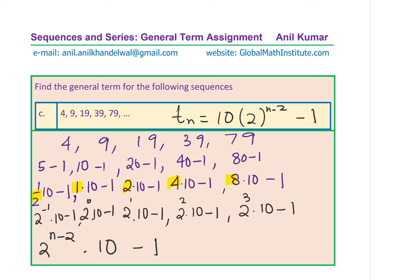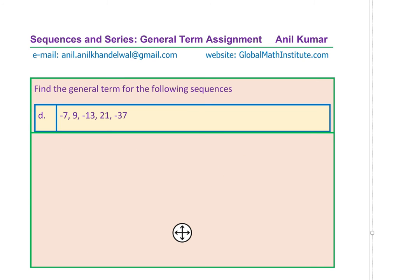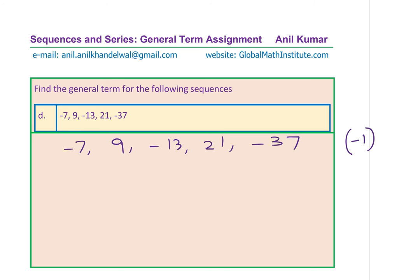Let's move on and take the next one — find the general term for the following sequence. This time, we have incorporated negative and positive numbers. It is: −7, 9, −13, 21, −37. So alternately, we are having the negative term. Whenever you have alternate negative terms, it is always (−1) to the power of something. Since the first term is negative, we put this to the power of n. That takes care of the alternating signs.